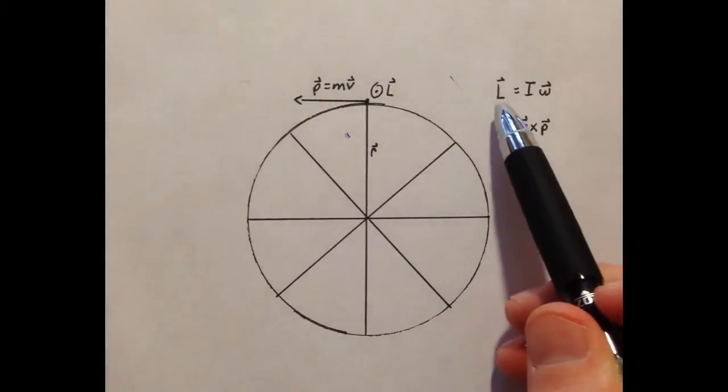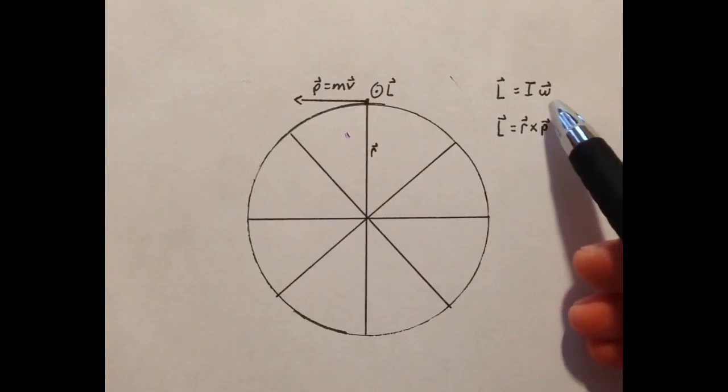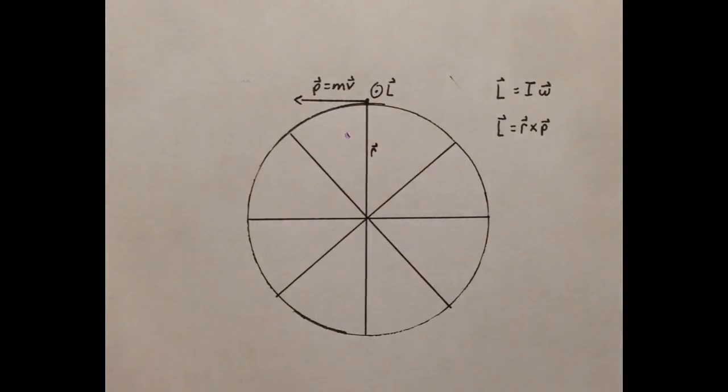This should make sense to you, since angular momentum is also moment of inertia times angular velocity. And for angular velocity, we also use the right-hand rule,